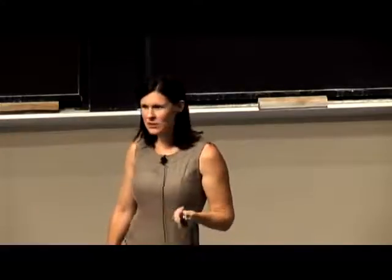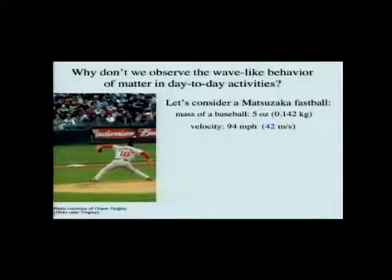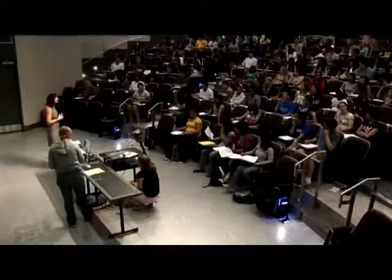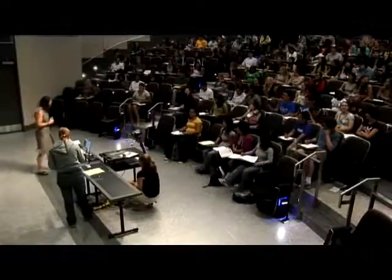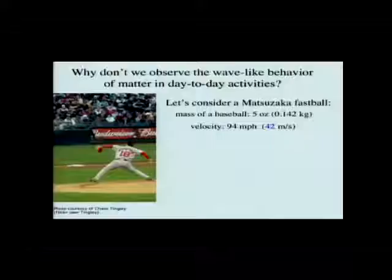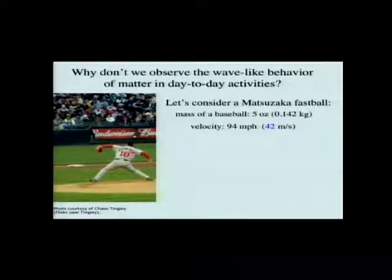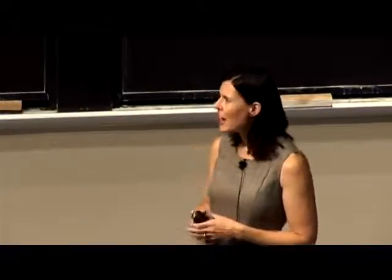It turns out that he could have picked anything to explain this, and hopefully done out the calculation — and we'll do this ourselves. The example we'll pick is considering a Matsuzaka fastball. Many of you are new to the Boston area, and I want to let you know it's not required that you be a Red Sox fan to be at MIT, but we do encourage it. Part of being a good Red Sox fan is knowing the statistics of your team — for example, if we're talking about a pitcher like Matsuzaka, we might want to know the wavelength of his average fastballs.